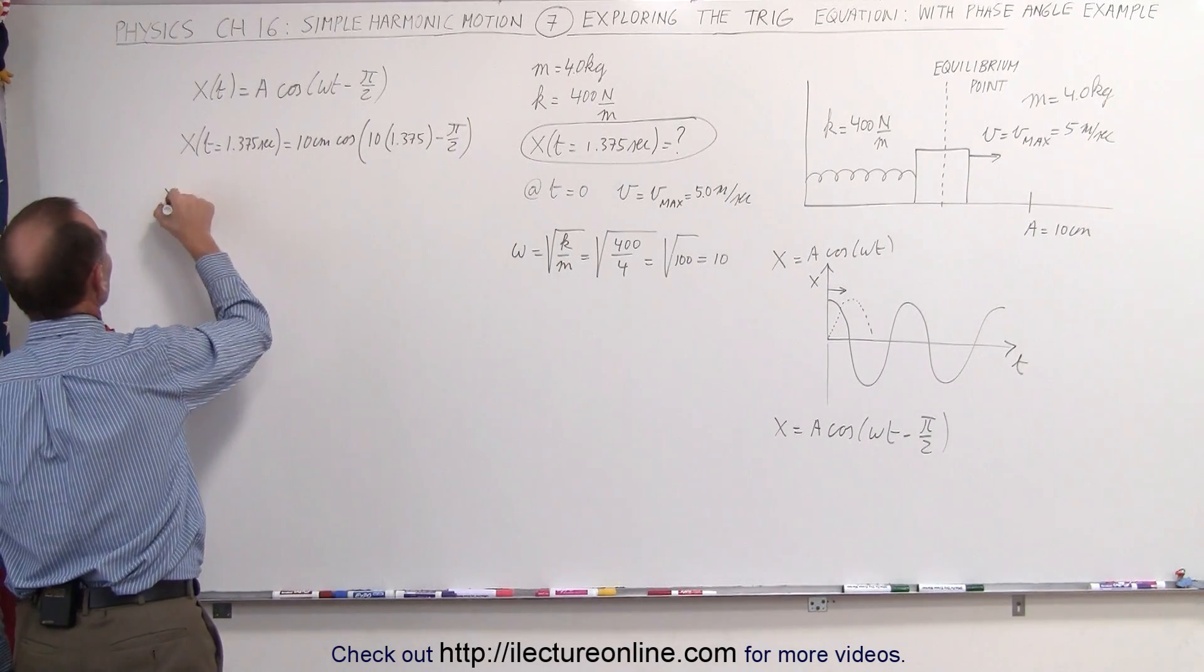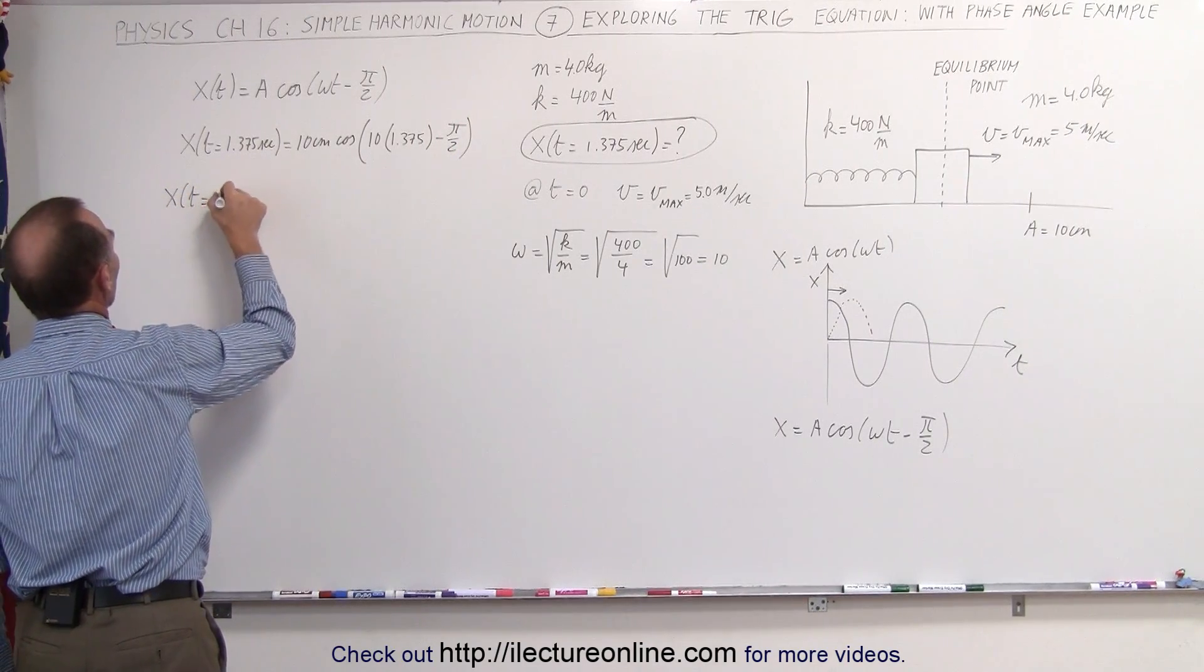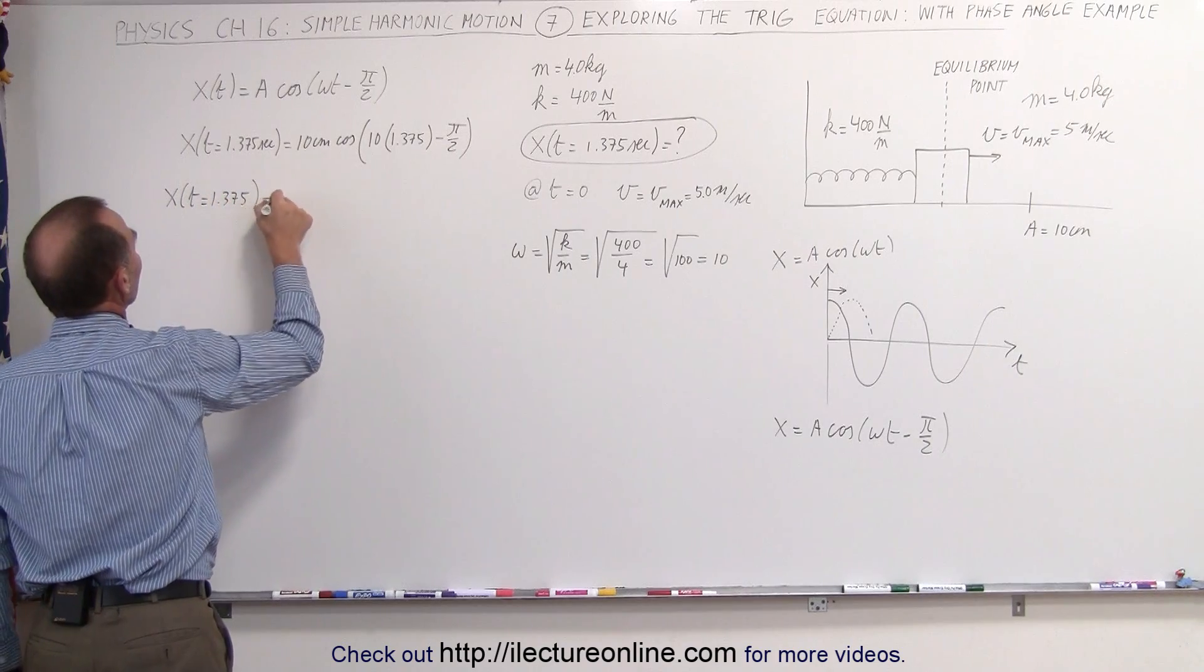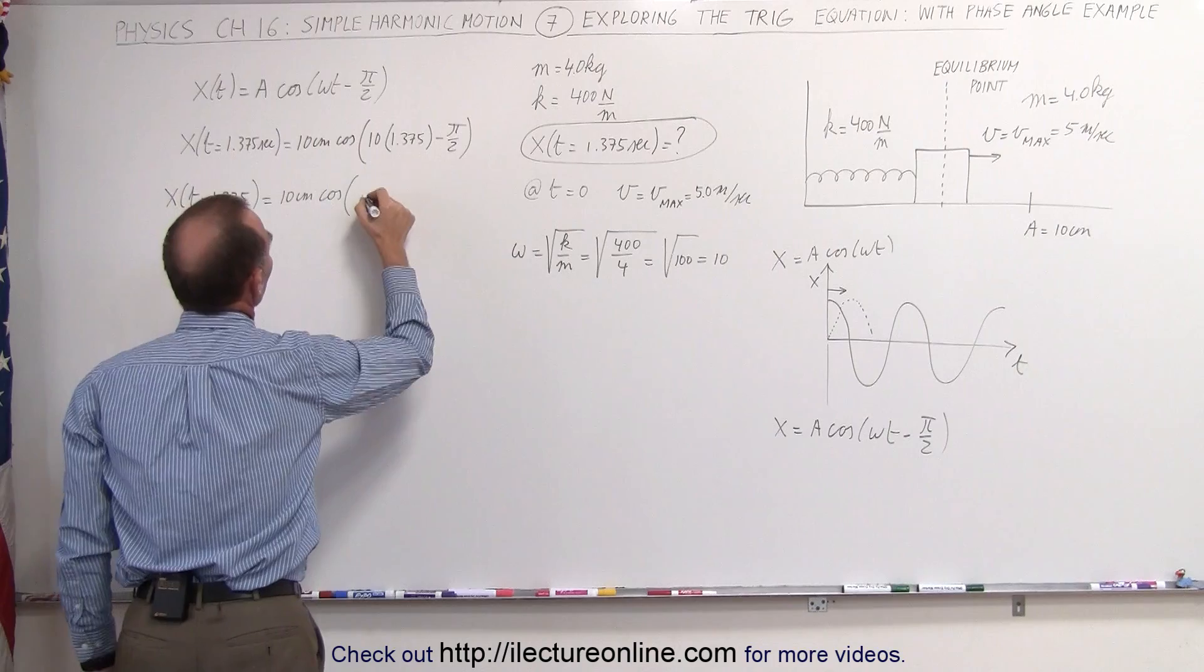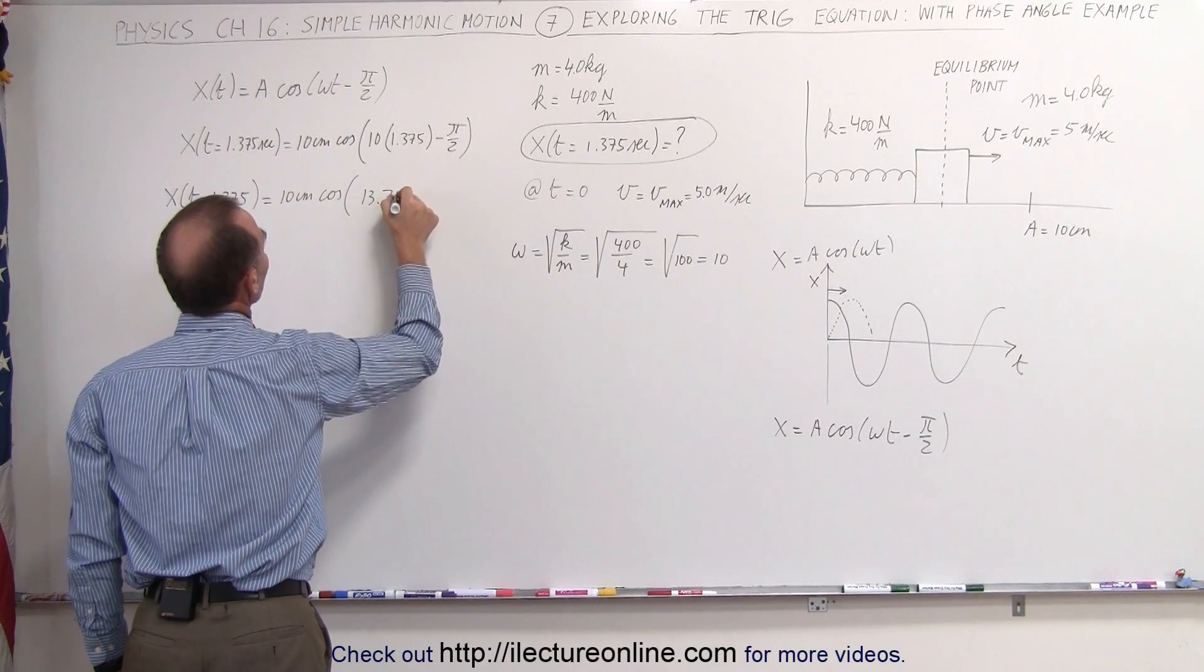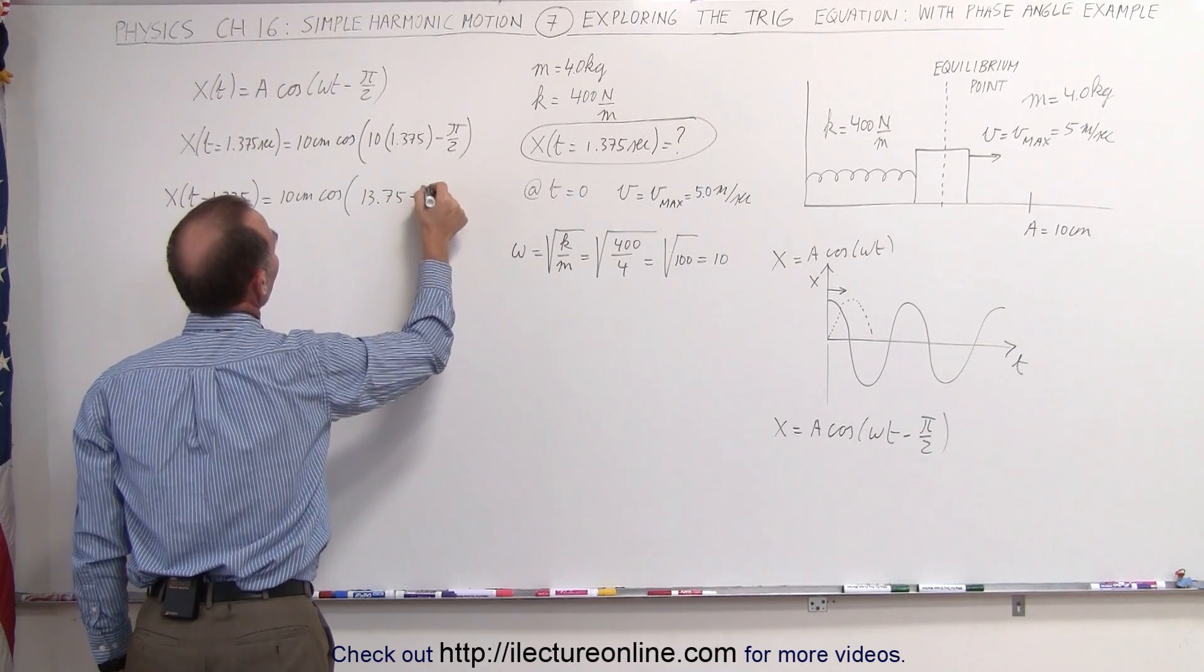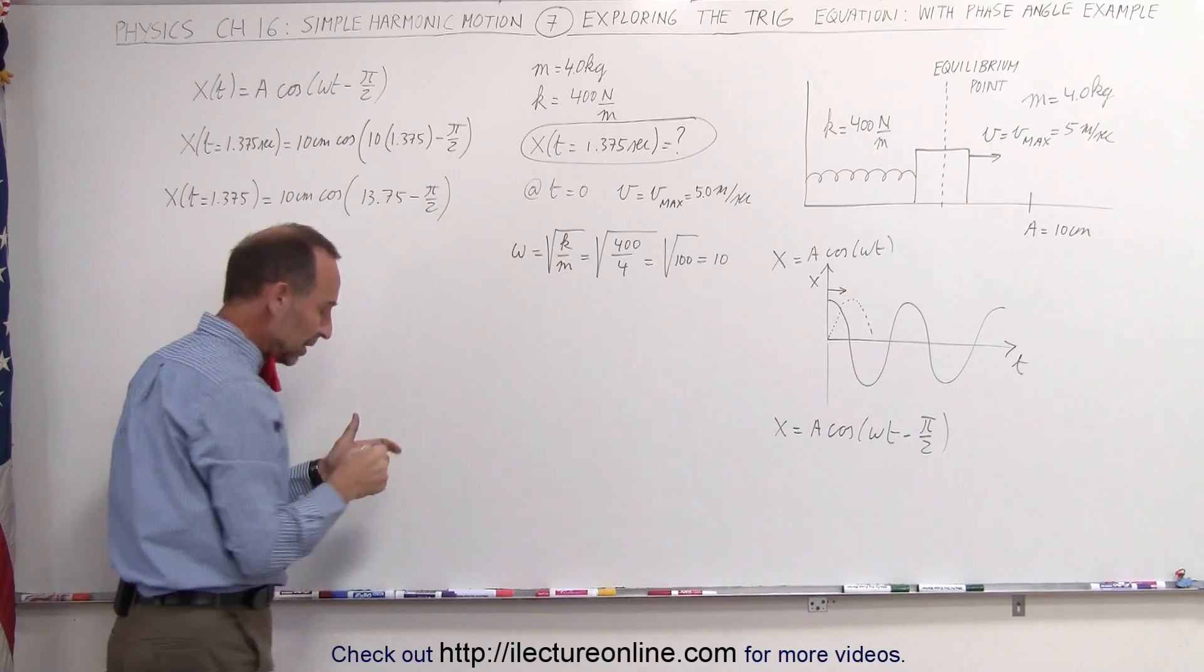So this becomes x as a function of time equal 1.375, equals 10 centimeters, times the cosine of 13.75 minus pi divided by 2. And now I need my calculator.